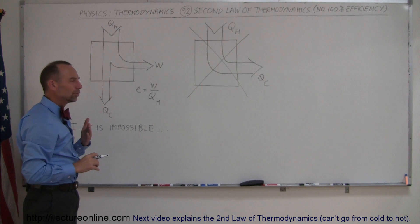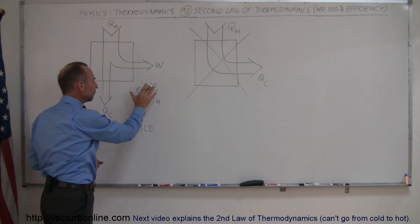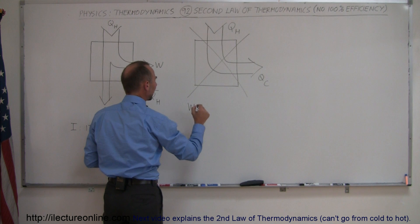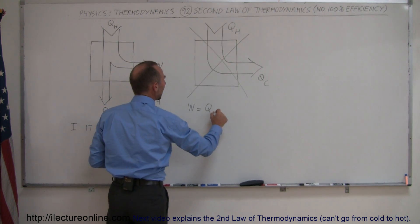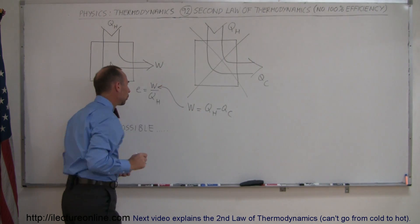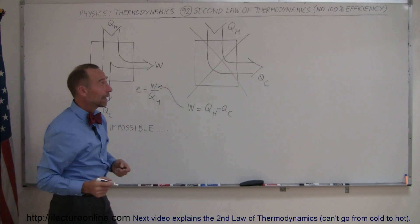So a way to look at that would be to have a different form of this equation. For example, we could say that the work done by the engine is equal to Q hot minus Q cold. And if we replace the work in our equation there by that, we get the following.